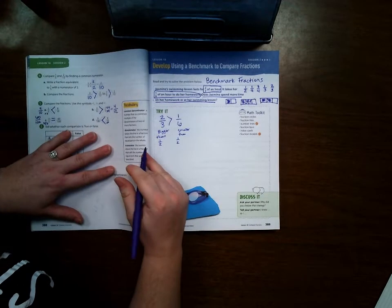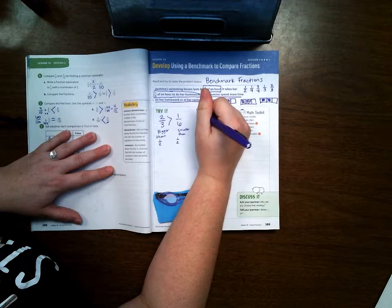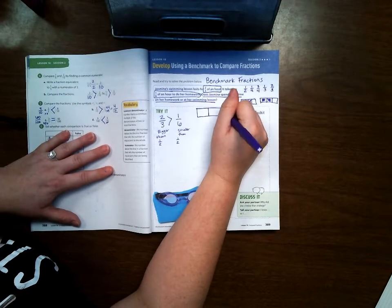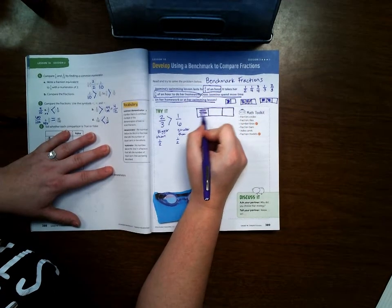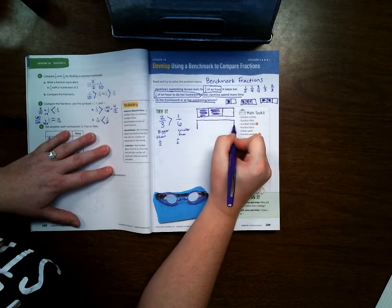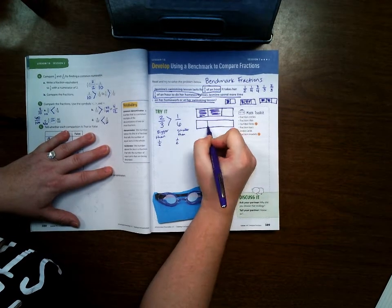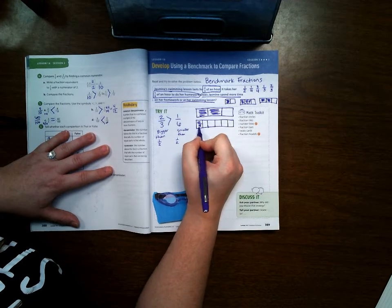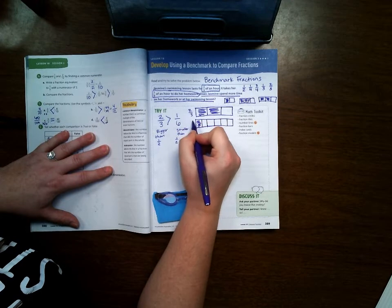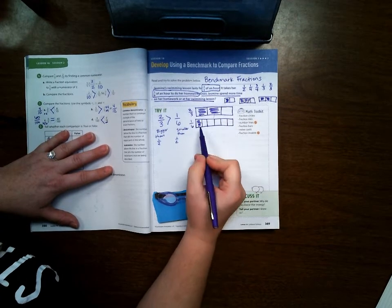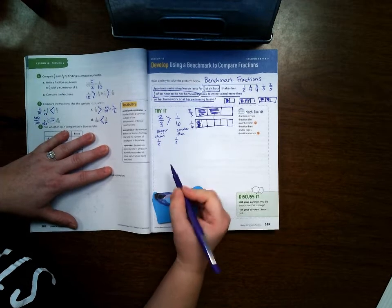But I'm going to check my answer just to be sure. First I'm going to check it by drawing a bar model. So I've got two-thirds and then I've got one-sixth. And it's easy again to see here that two-thirds is more than one-half and one-sixth is hardly anything at all.